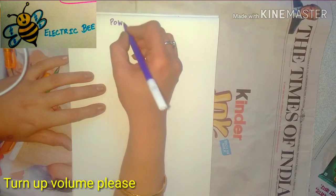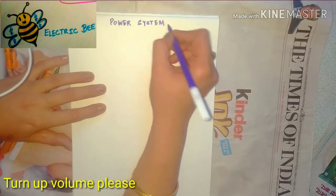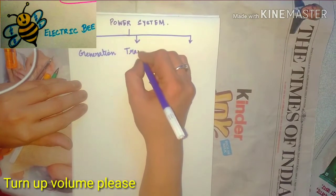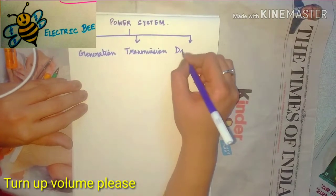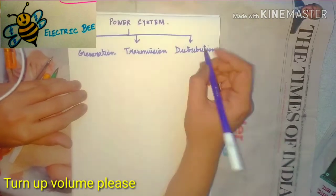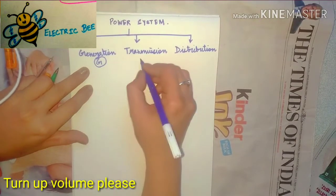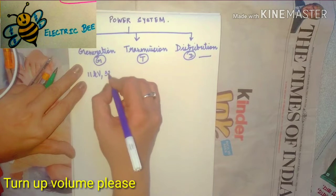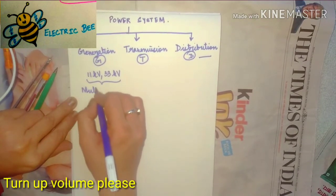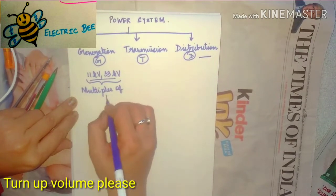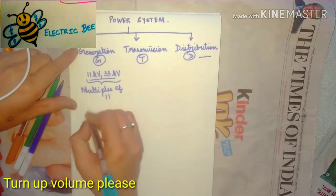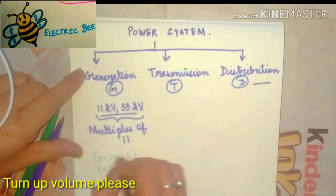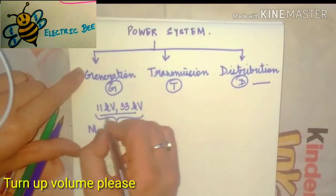A power system has basically three major components: the first one is the generation part, the second one is the transmission section, and the third one is the distribution. Generation takes place at 11 kilovolts or 33 kilovolts, both being multiples of 11. The basic reason for this is the form factor, which has a value of 1.1, and that is why generation voltages are in the range of 11 to 33 kV.